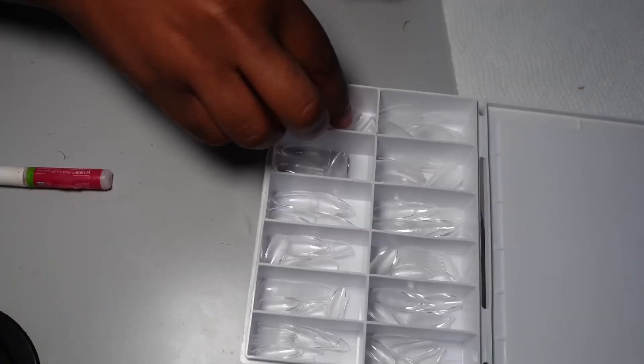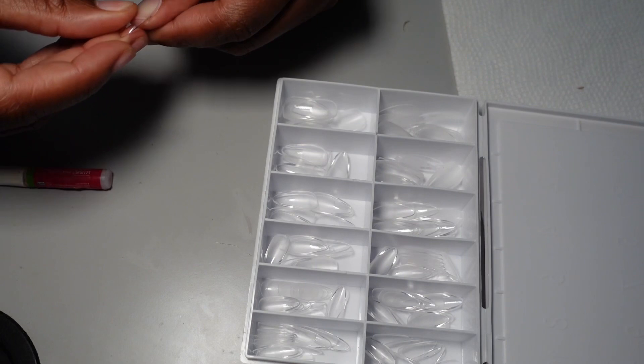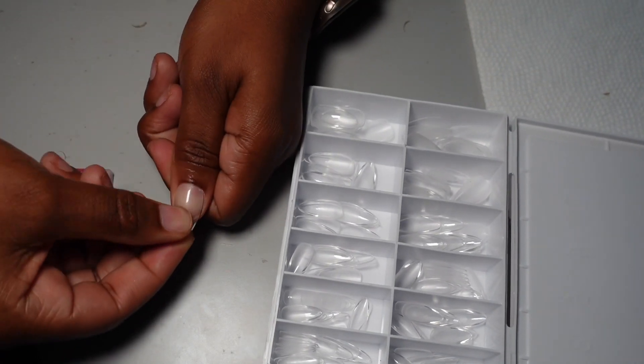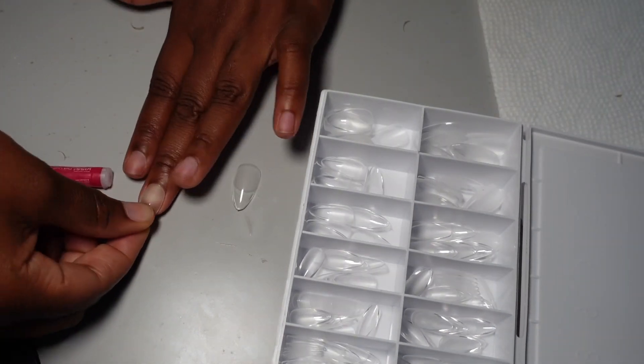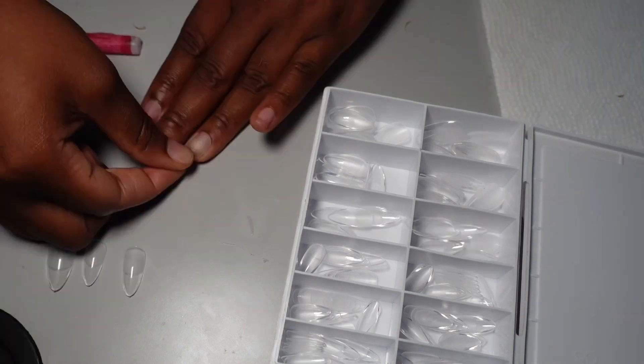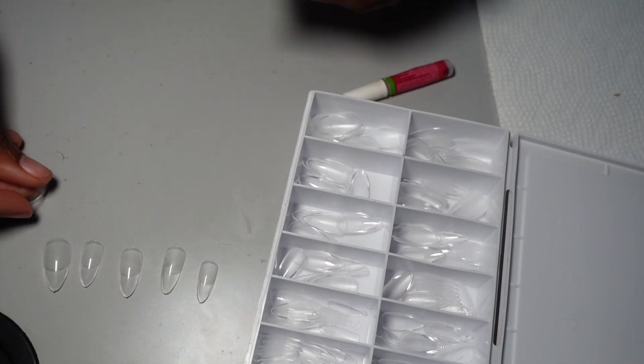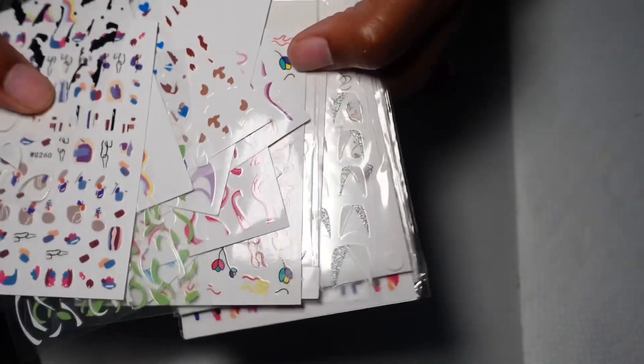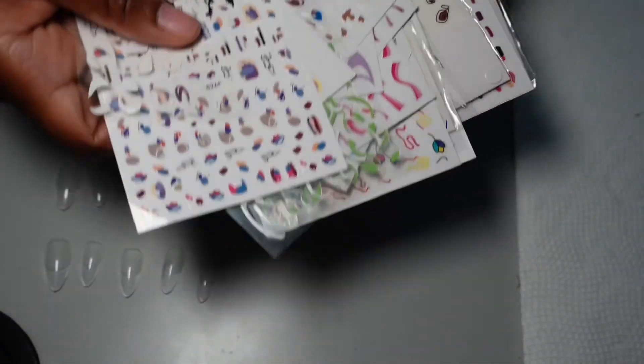These nails are like long oval shape, and again, I got these from Amazon. And what I'm doing right now is I'm sizing up my nails so I can already know which nail goes on which finger before I go ahead and glue them on.